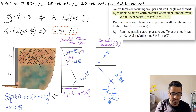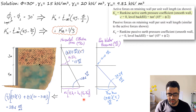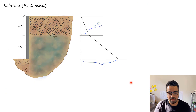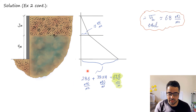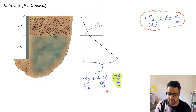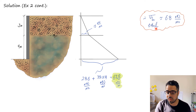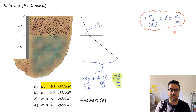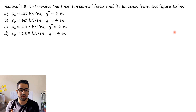To find the total horizontal stress on the wall, we add the contributions from Layer 1 and Layer 2. From Layer 1: 15 kN/m², no water. From Layer 2: 28.6 kN/m² from soil plus 39.24 kN/m² from water. Total σh ≈ 68 kN/m². That gives us Option A.